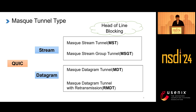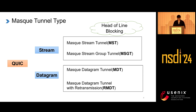The other type of tunnel uses datagrams to transmit application connection packets, which does not have the head-of-line blocking problem because there is no dependency between different datagram frames in QUIC. In MASQUE, there are two types of datagram tunnels: MDT and RMDT, where RMDT can retransmit lost packets.